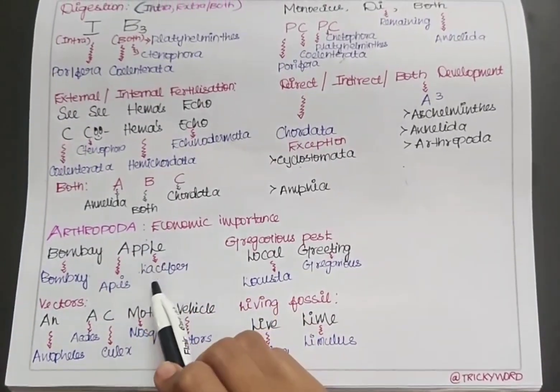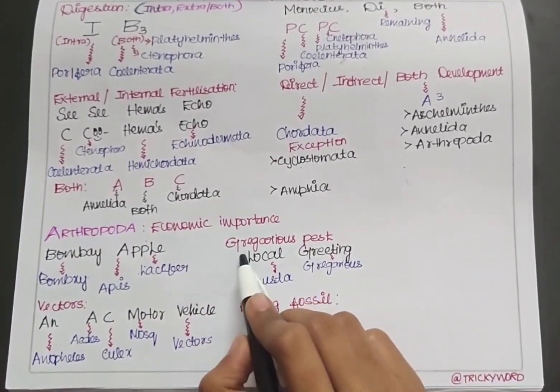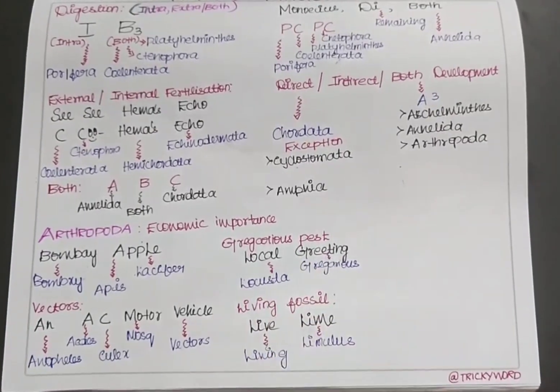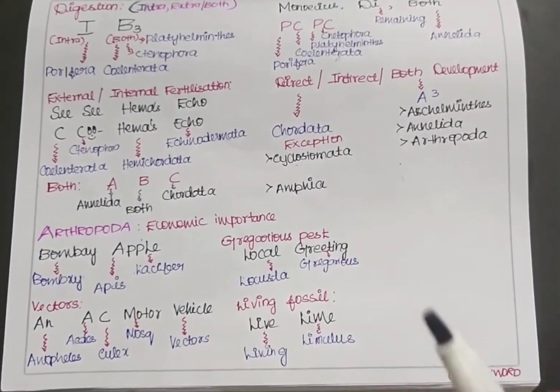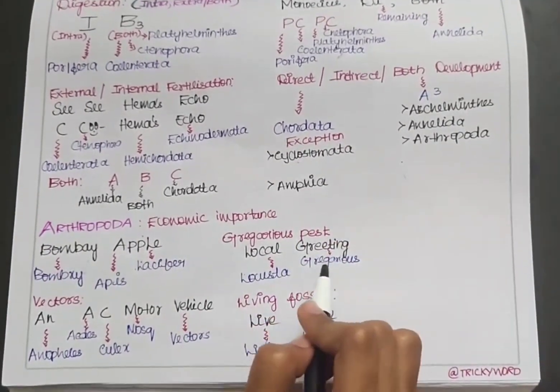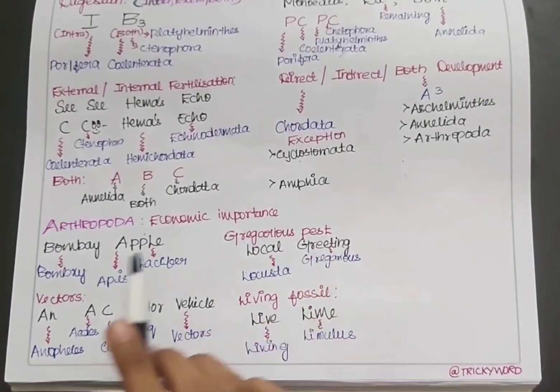Next, we'll talk about the gregarious pest, which is given by 'Local Greeting'. Imagine wishing your friend in your local language. Local Greeting - L stands for Locust, and G stands for gregarious pest.